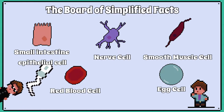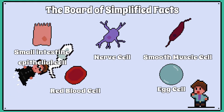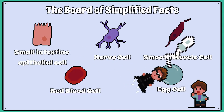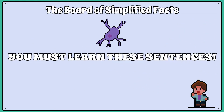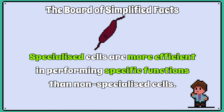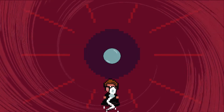Here are some examples of specialised cells that you would find in your body. They share many key features with the generic cell, but they have a few special adaptations. You must remember the following sentences when describing specialised cells: specialised cells are adapted for specific functions within multicellular organisms. Specialised cells are more efficient in performing specific functions than non-specialised cells.